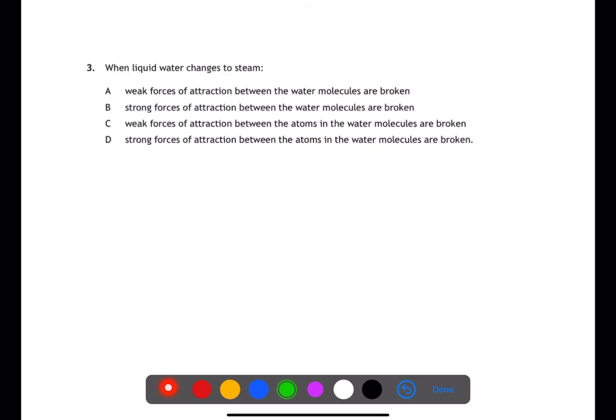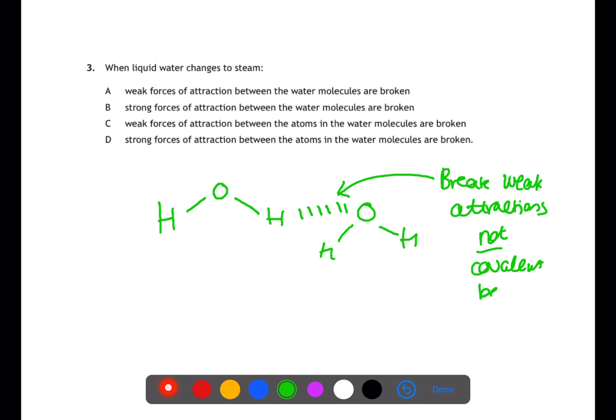To understand what happens when liquid water turns to steam, we need to look at the structure of water. Water is made of molecules of H2O. The hydrogen and oxygen atoms are held together with strong covalent bonds. The molecules are held together by weak forces of attraction. When you boil liquid water, you break these weak forces of attraction. You do not break the covalent bonds within the water molecules.